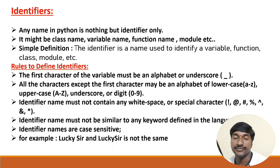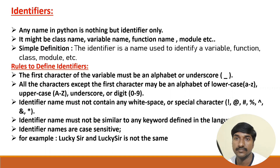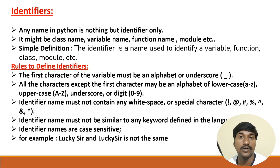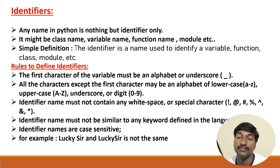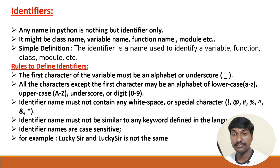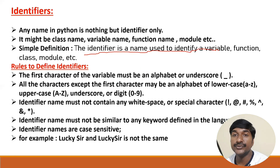Now we'll discuss what an identifier is and what rules exist to define identifiers. An identifier is simply any name in Python. If you use a variable name, that is an identifier. A class name is also an identifier. A function name is also an identifier. So whatever names you use in Python programming language — class name, variable name, function name, module name — all come under identifiers. The simple definition is: an identifier is a name used to identify a variable, function, class, or module.